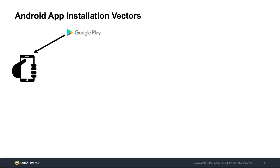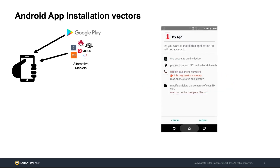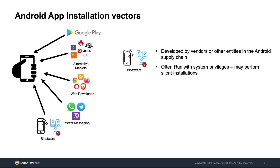What remains unknown is how these apps are actually installed on user devices. Installations on Android can happen in different ways. By default, only installations via the official Play Store market are allowed. However, users have the option to enable installation from third parties that will allow applications like alternative markets to operate properly. Even then, these apps need to obtain the appropriate permission and notify the user before installation. While apps are largely distributed through markets, other smaller alternative distribution vectors also exist like web downloads, instant messaging or even bloatware.